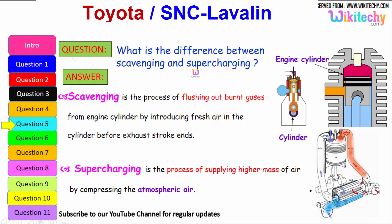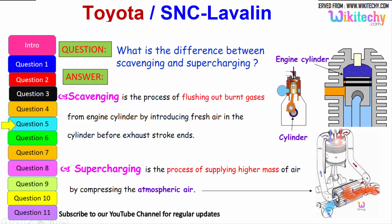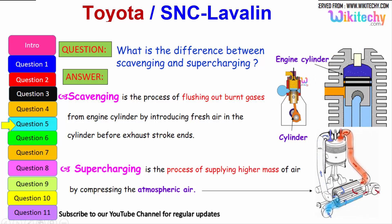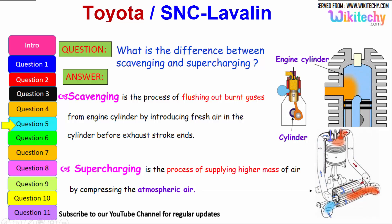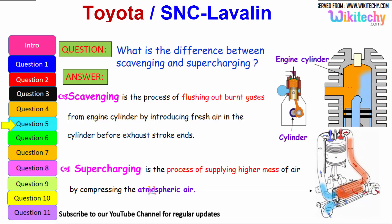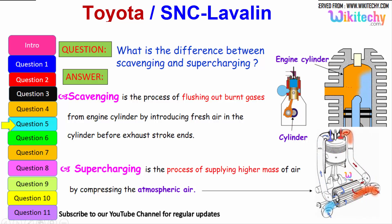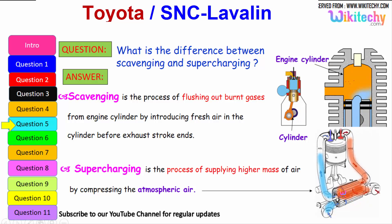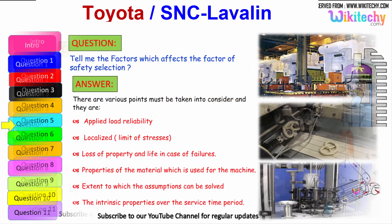What is the difference between scavenging and supercharging? Scavenging is the process of flushing out the burnt gases from the engine cylinder by introducing fresh air into the cylinder before the exhaust stroke ends. Supercharging is the process of supplying higher masses of air by compressing it above atmospheric pressure — you are able to see that high-pressure air is injected into the cylinder to compress the atmospheric air.